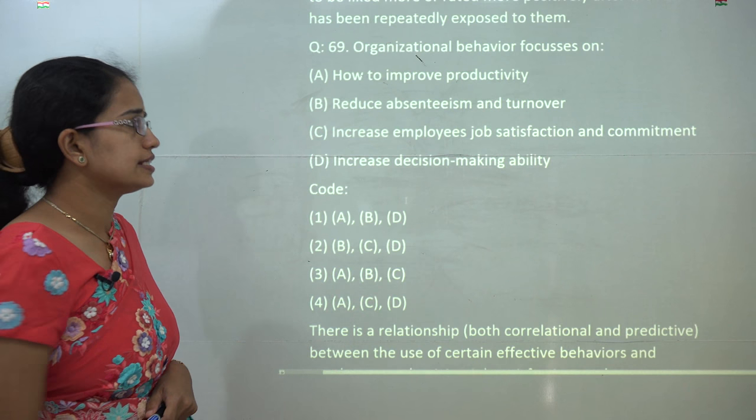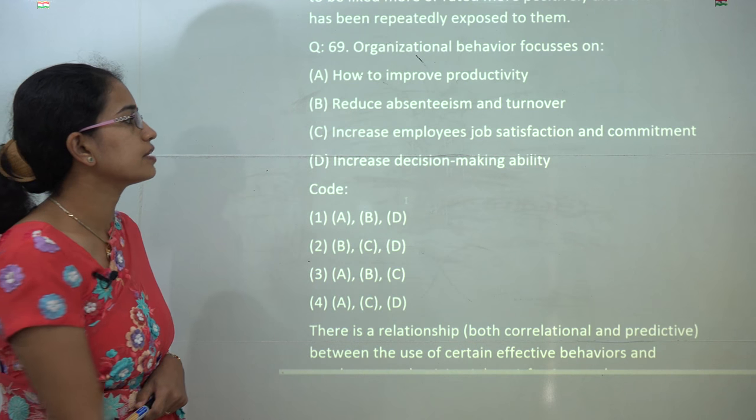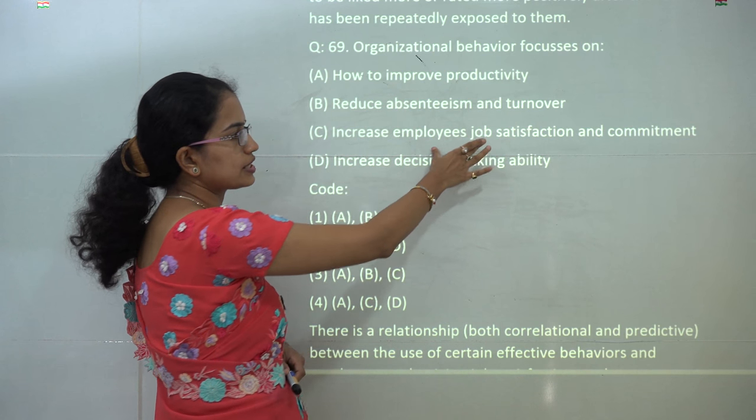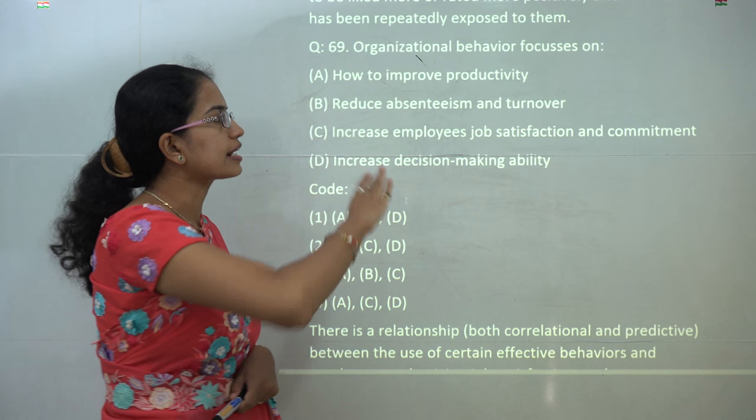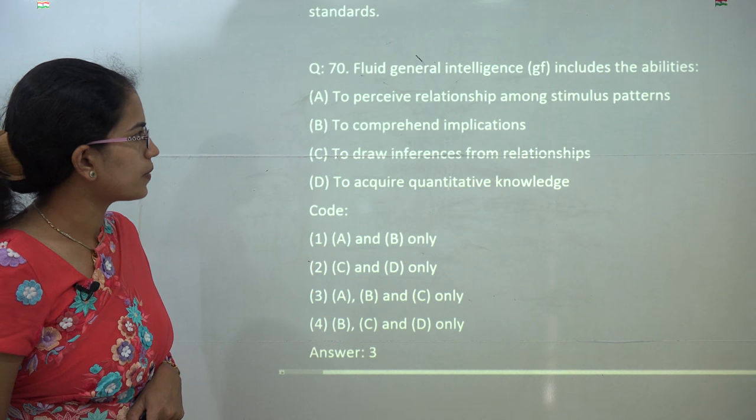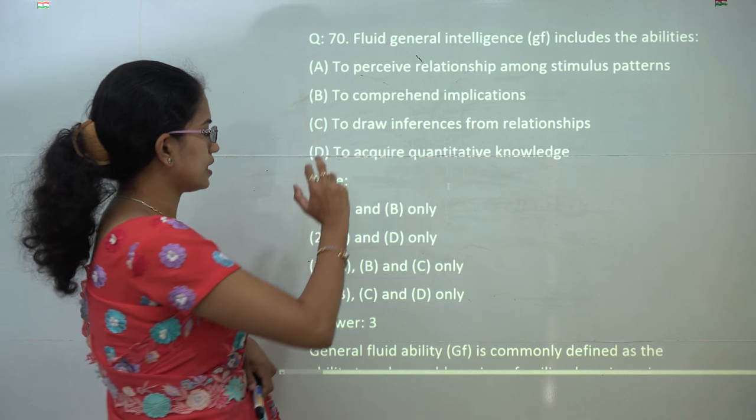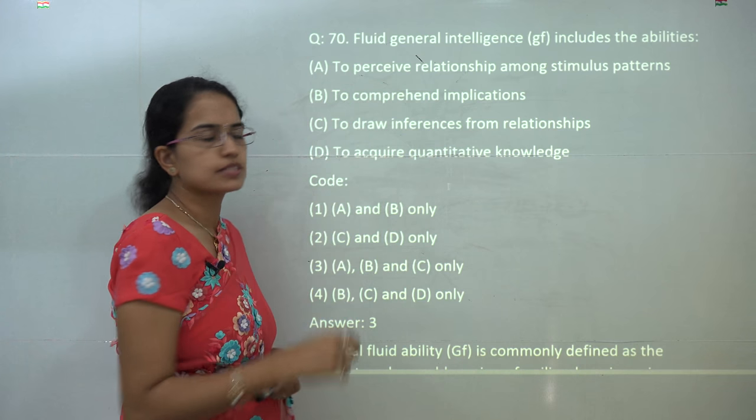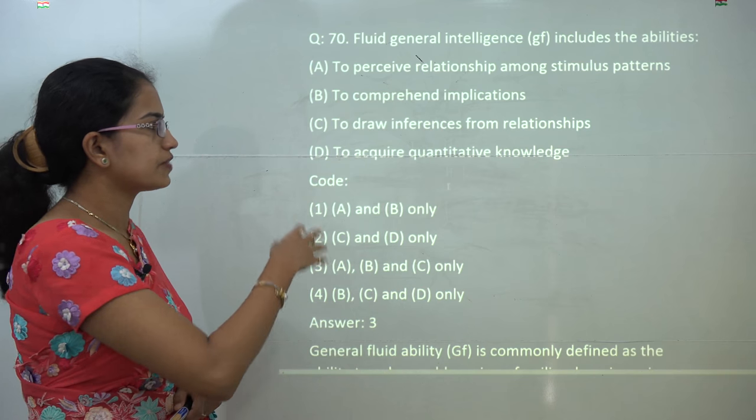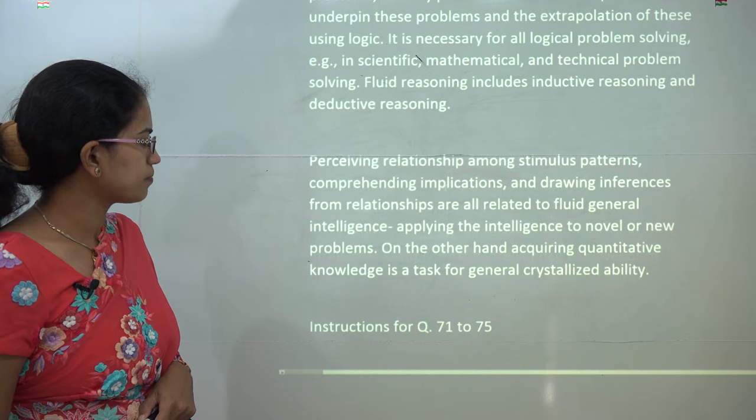The next is organizational behavior. Now the core idea of organizational behavior is to increase the productivity. So you try to improve productivity, reduce absenteeism, increase employee satisfaction and commitment. So A, B, and C are directly related and are the correct explanations. Now the next question talks about the fluid general intelligence includes. So fluid general intelligence includes relationship among the stimulus patterns, comprehending the implications, and drawing the various inferences from the relationship. So you have A, B, and C as the correct explanation.